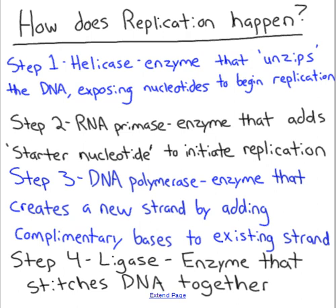Step three is DNA polymerase. This is an enzyme that adds new nucleotides to the new strand by pairing A with T and G with C. It moves down the old strand and puts new nucleotides on the existing strand.